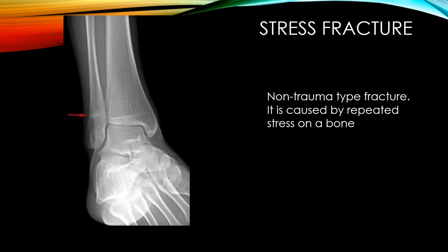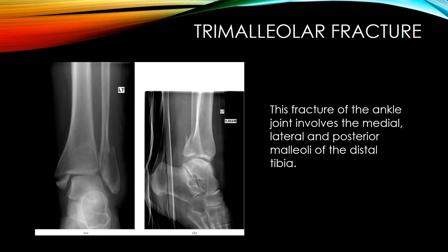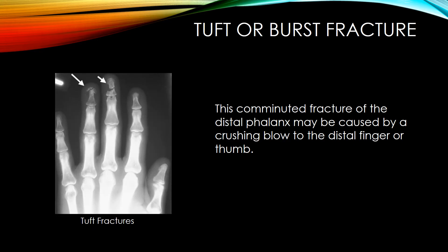A stress fracture is a non-trauma type fracture caused by repeated stress on the bone. A trimalleolar fracture of the ankle joint involves the medial, lateral, and posterior malleoli of the distal tibia. A tuft or burst fracture is a comminuted fracture of the distal phalanx that may be caused by a crushing blow to the distal finger or thumb.